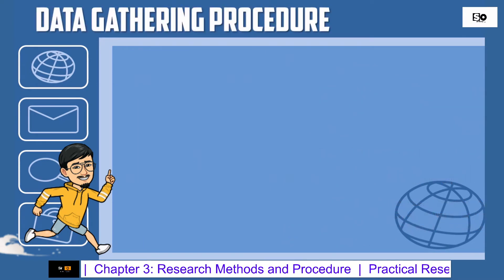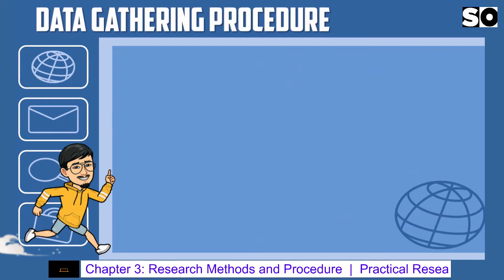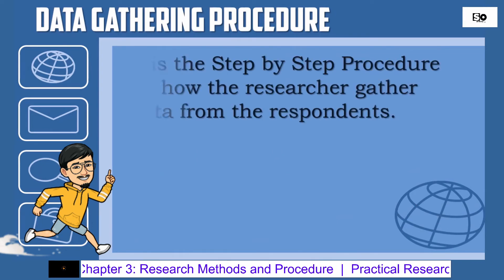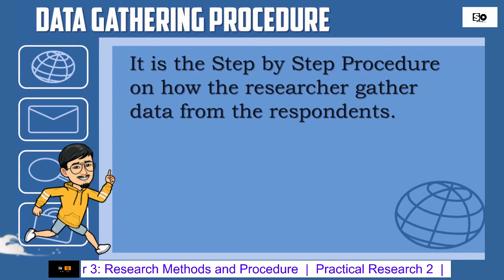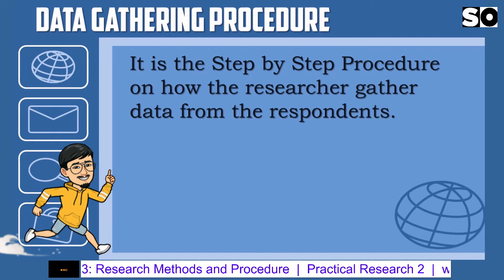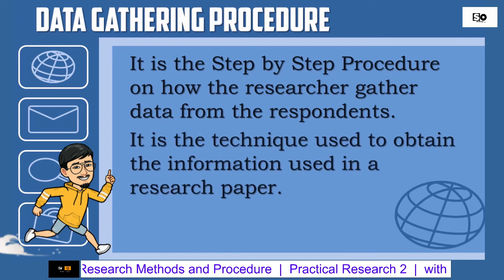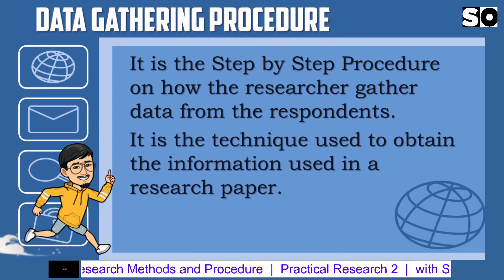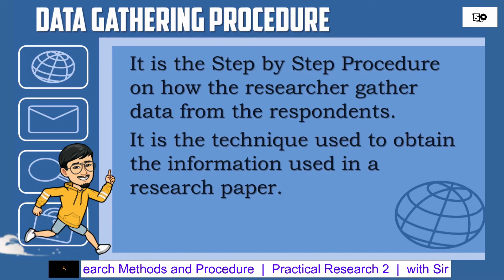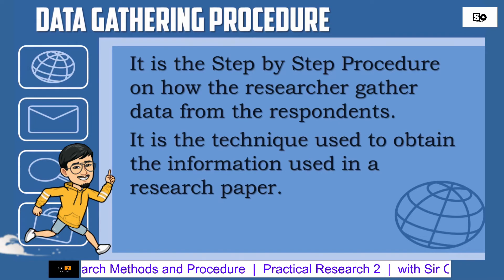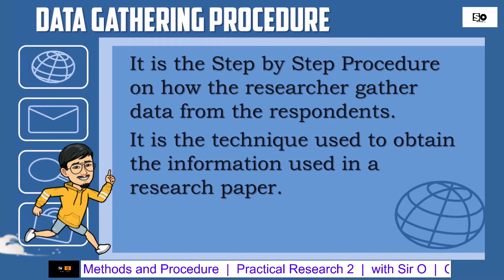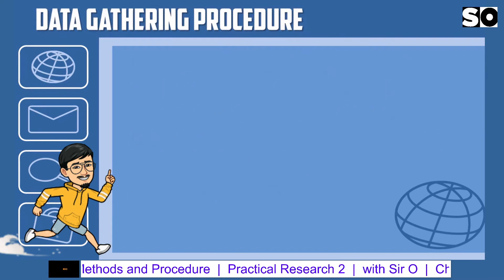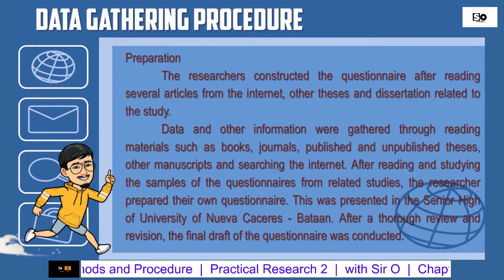Data Gathering Procedure. It is the step-by-step procedure on how the researcher gathered data from the respondents. It is the technique used to obtain the information used in a research paper. Here is an example of a data gathering procedure.